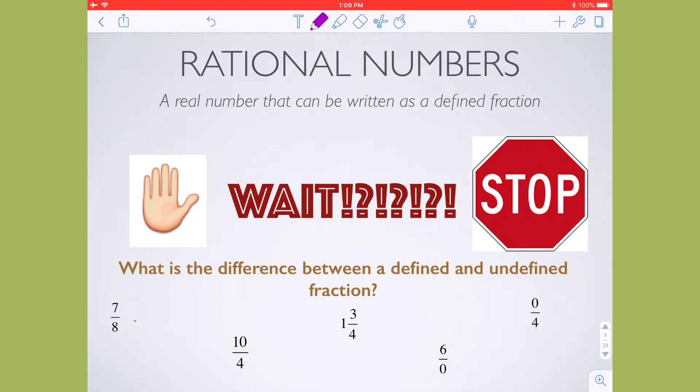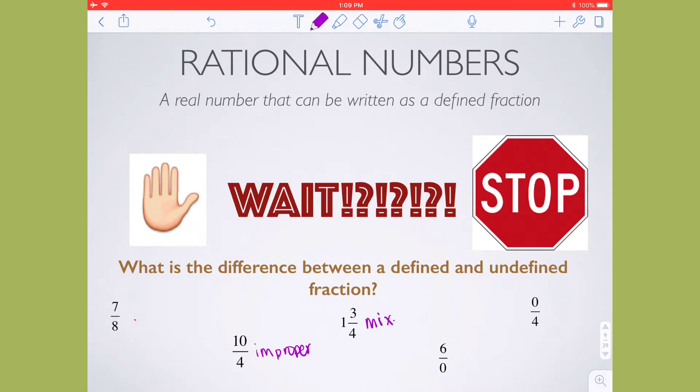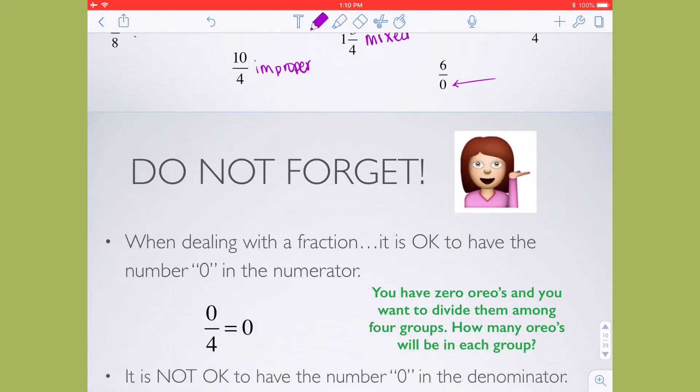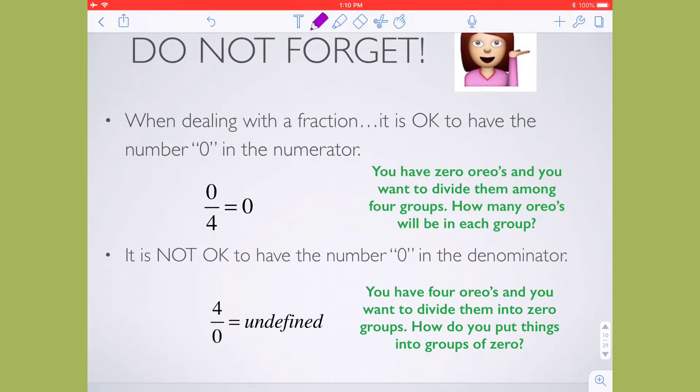I've listed out different types of fractions here for you. 7 over 8 is a regular one. This is considered an improper fraction because my numerator is larger than my denominator. This is considered a mixed fraction. But then these last two, I come into the issue with having a 0 in them. One has a 0 in the numerator, the other has a 0 in the denominator. You don't want to forget what to do when dealing with a fraction that has 0 in either the numerator and the denominator.